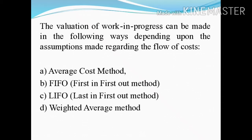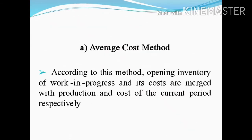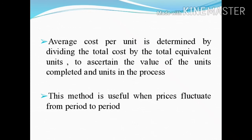We will discuss the first method, which is the Average Cost Method. According to this method, the opening inventory of work in progress and its costs are merged with the production and costs of the current period respectively. The cost per unit is determined by dividing the total cost by the total equivalent units, to ascertain the value of the units completed and units in the process.